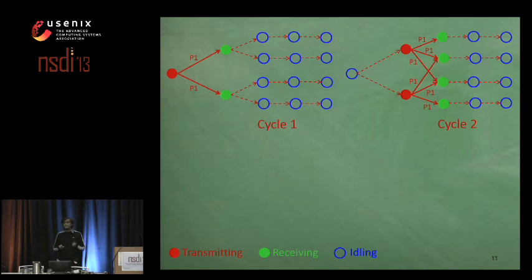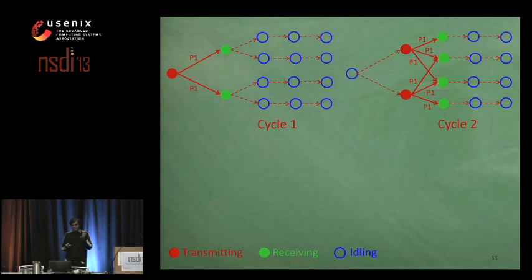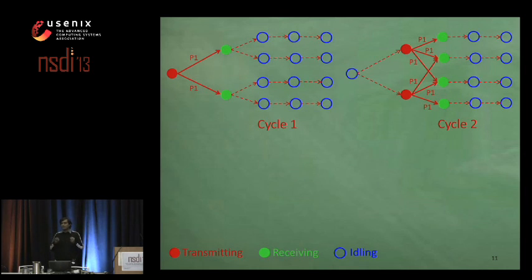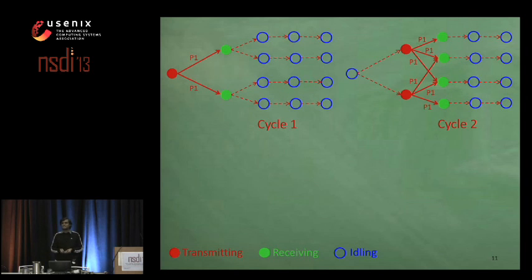This way, we eliminate the need for contention resolution at nodes that belong to the same level of the tree. The challenge was to ensure that different nodes forward received packets at the same time while accommodating all the other functionalities of SPLASH.